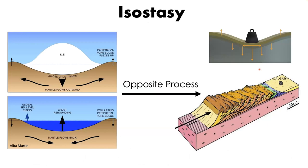Isostasy is essentially buoyancy and Archimedes' principle — the lithosphere floating on the asthenosphere. It's basically a vertical response to changes in pressure. A glacier imposes a load on the underlying lithosphere and mantle, causing the lithosphere to sink with outflow of the asthenosphere into bulging flanking regions. When the glacier melts, the load is removed and the crust rebounds upward — a process called post-glacial rebound or glacial isostasy.